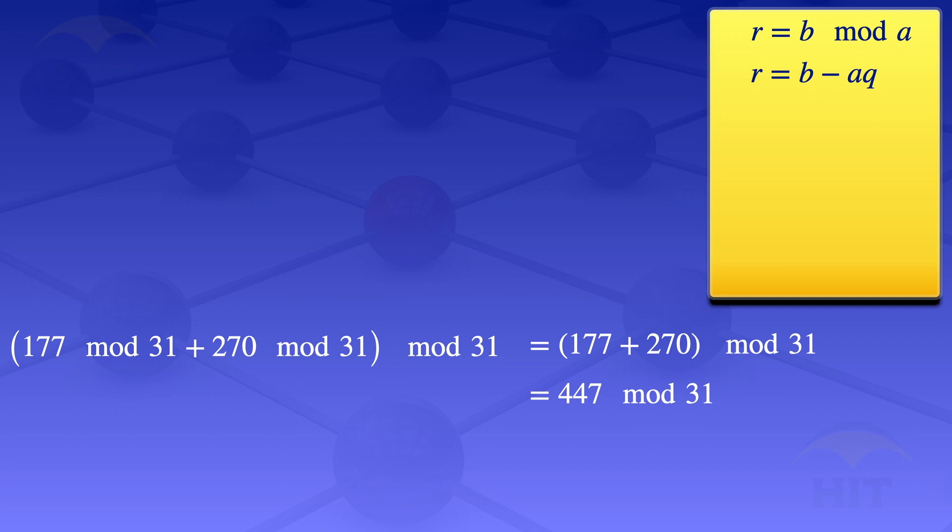In this case, our divisor is 31, so a = 31. Our dividend is 447, so b = 447.